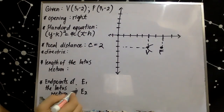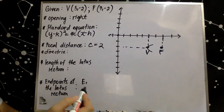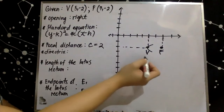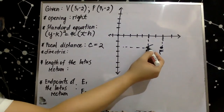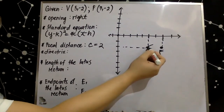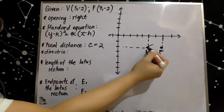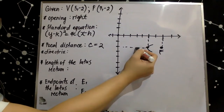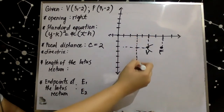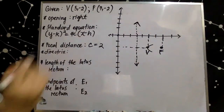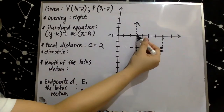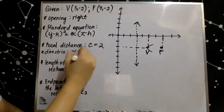Based on the definition of a parabola, the distance from any point of the parabola to the focus is equal to the distance from that same point to the directrix. So since the vertex is also a point on the parabola, the distance from vertex to focus is also equal to the distance from vertex to the directrix. Thus, vertex to directrix is also equal to 2. We count 2 units to the left side of the vertex, and this is our directrix. The directrix intersects the x-axis, so the equation of our directrix is x equals 3.